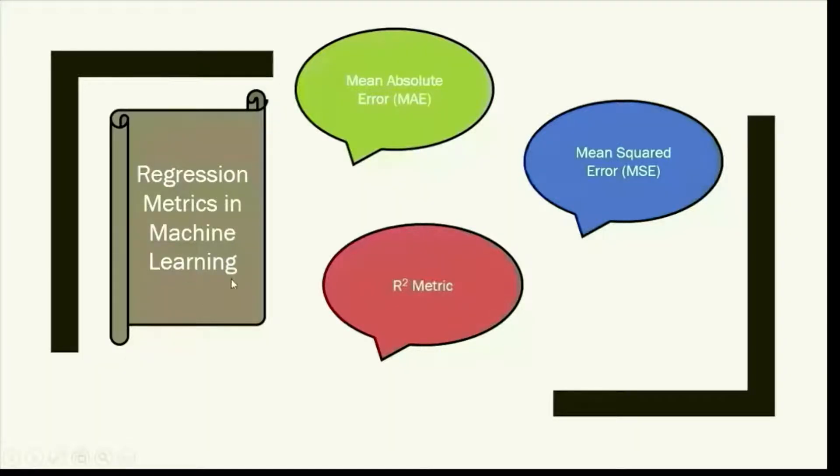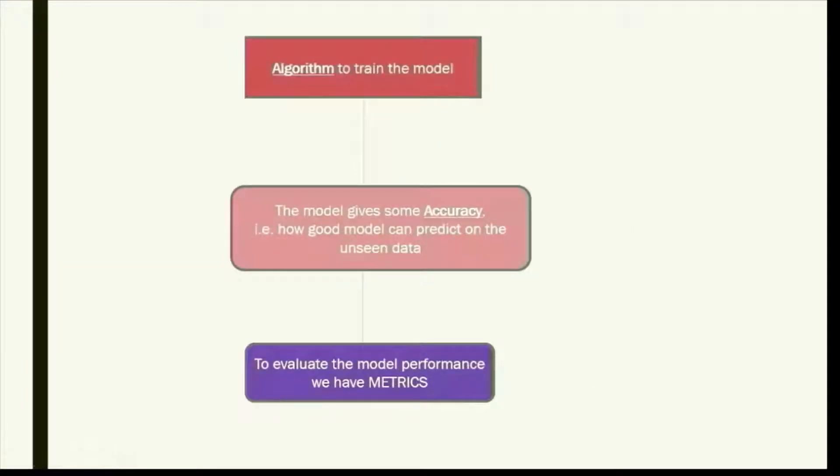First of all, how does this metric come into the picture of machine learning? We've got an algorithm which trains the model. This algorithm gives some accuracy to the model, meaning how well my model can predict on unseen data.